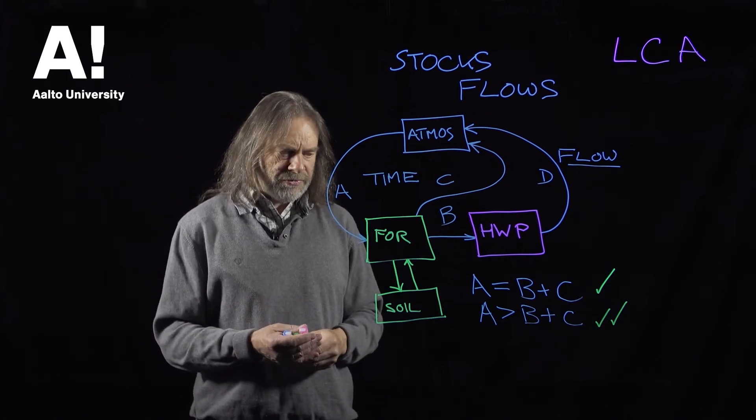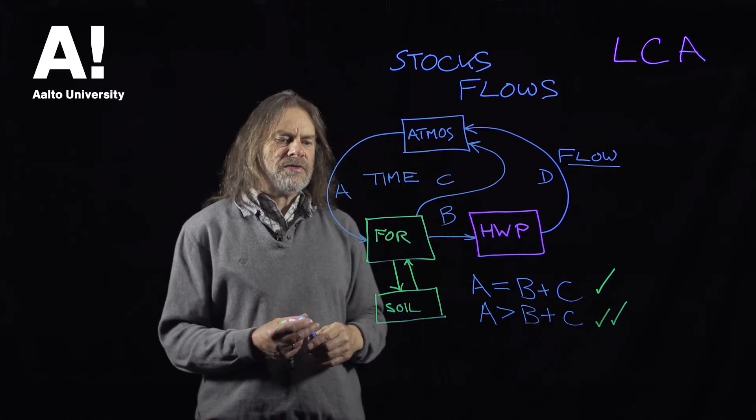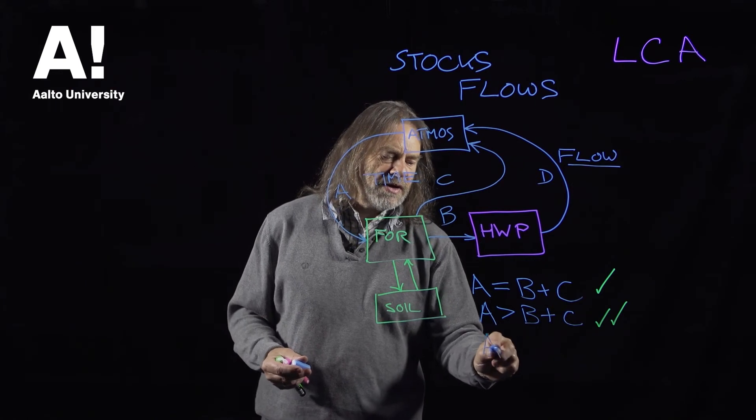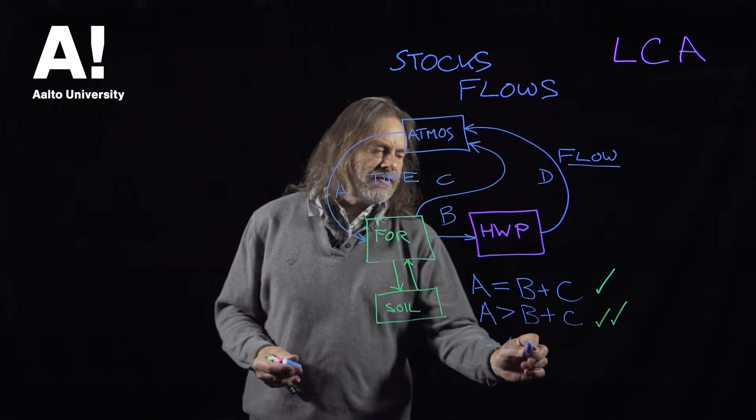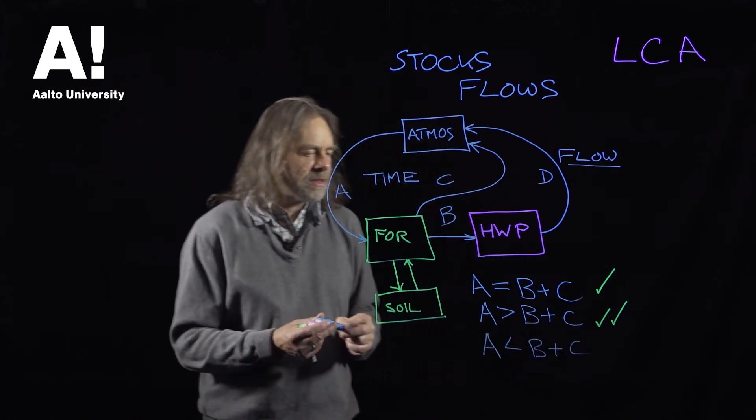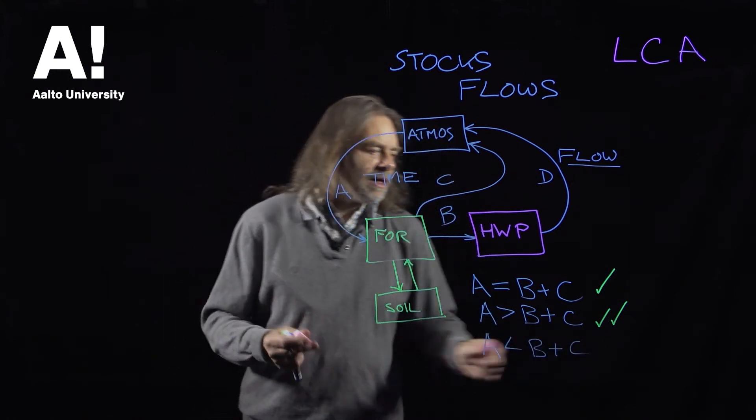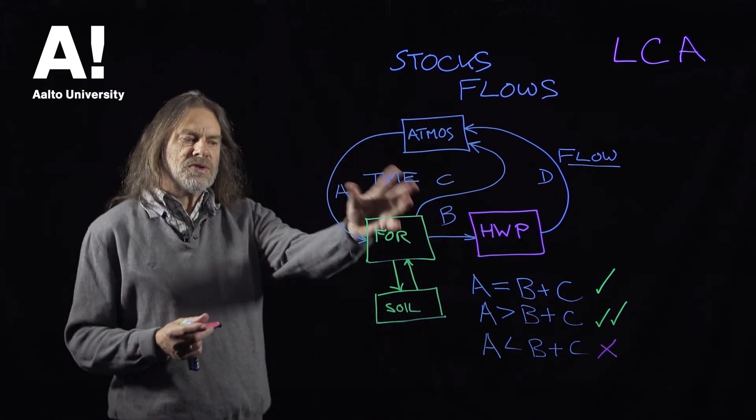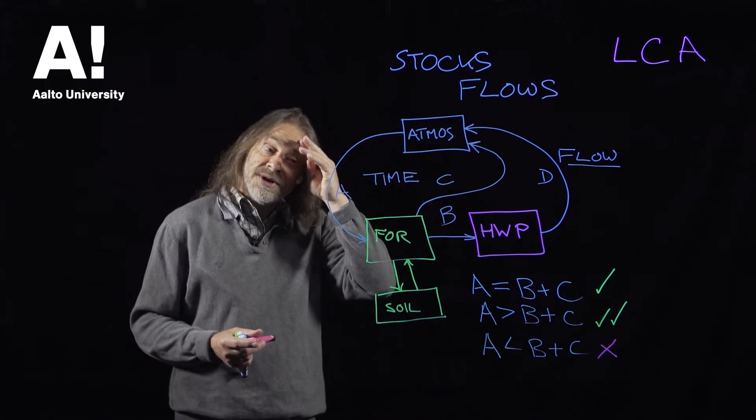However, if we have a situation where the flow into the forest is less than the flow out so that this flow A is less than the flow B plus C, that is not a good situation. It means the forests are decreasing in size and eventually of course they would disappear entirely.